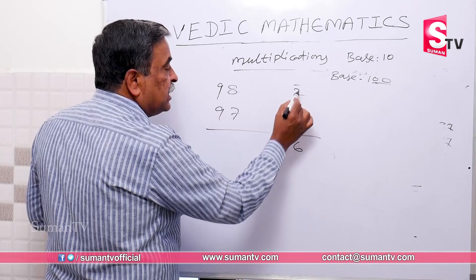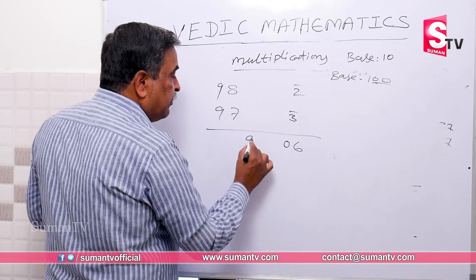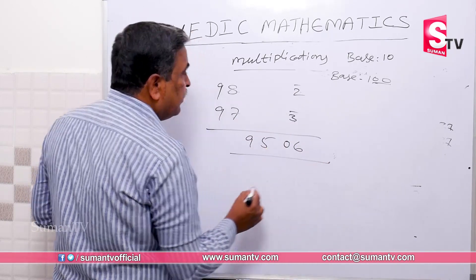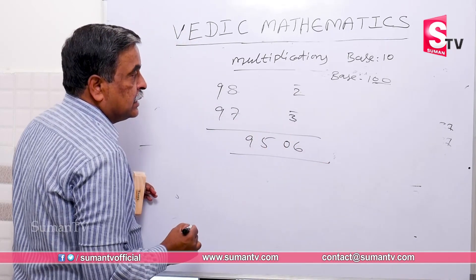And in 97, it is 95. So this is our answer: 95, 0,6.